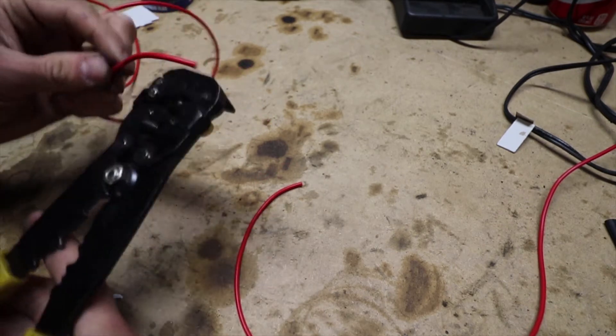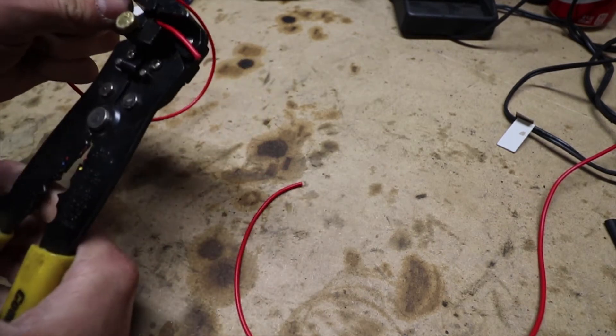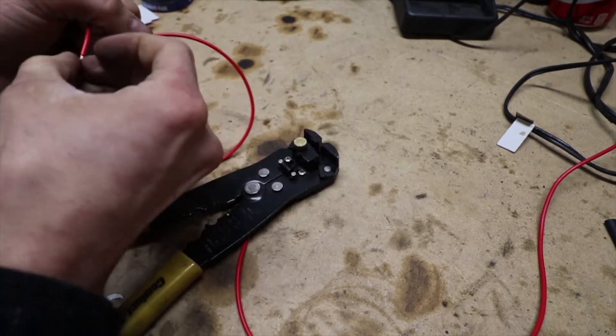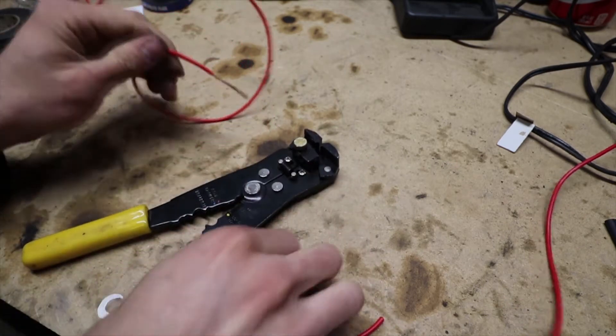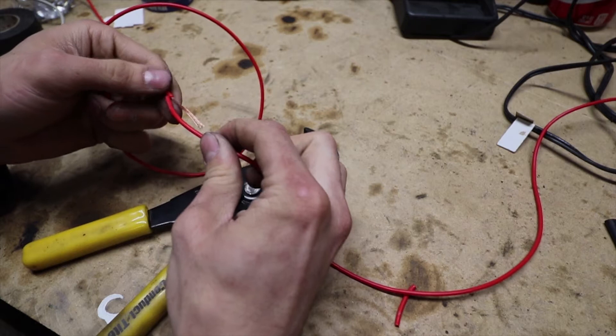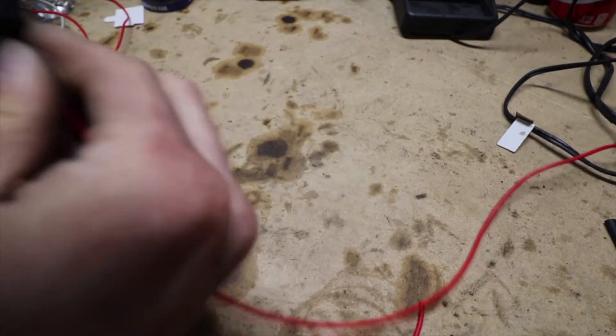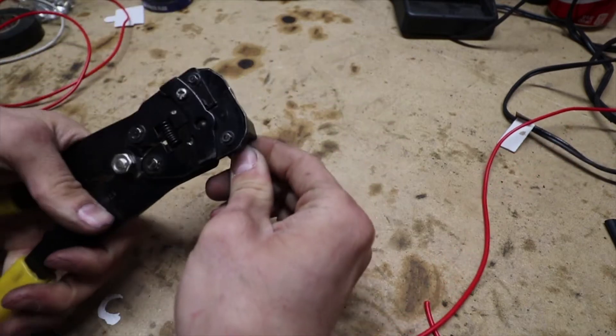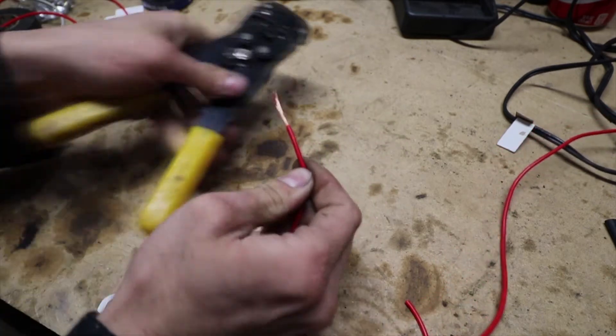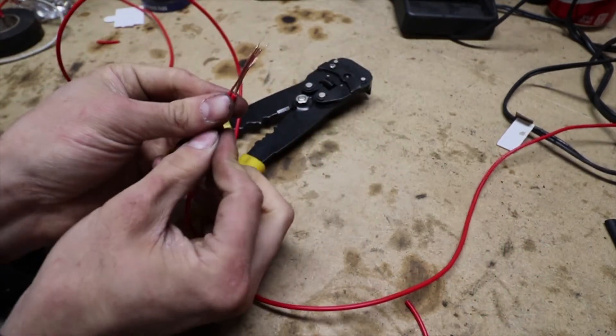Just got two wires here that I'm going to splice. You want to strip off three quarters of an inch to about an inch off of each wire. You want them to be roughly equal. There we go.